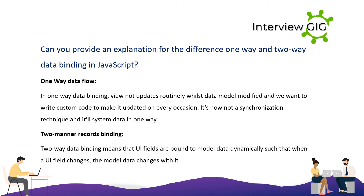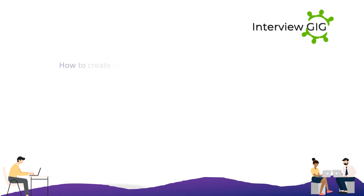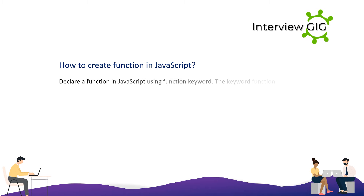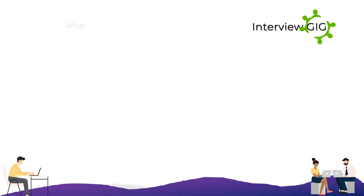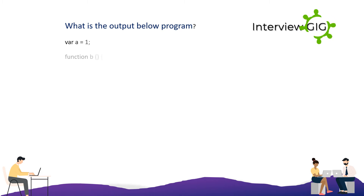How do you create a function in JavaScript? You declare a function using the function keyword, which precedes the name of the function. The syntax is: function functionName() { // function body }.